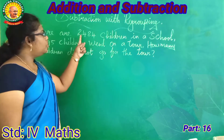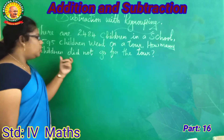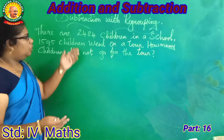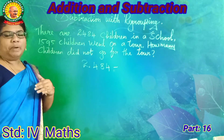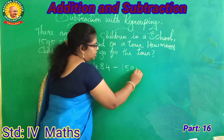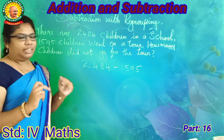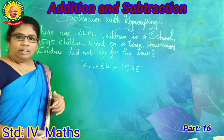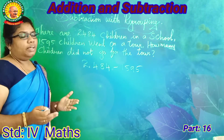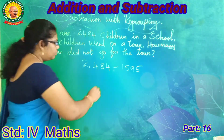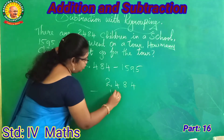Do you understand how to do subtraction with regrouping? Let's see one word problem. There are 2484 children in a school. 1595 children went on a tour. How many children did not go for the tour? Total children: 2484 minus 1595. Write the numbers column-wise.